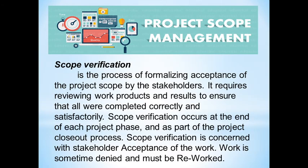Scope verification is the process of formalizing acceptance of the project scope by the stakeholders. It requires reviewing work products and results to ensure that all were completed correctly and satisfactorily. Scope verification occurs at the end of each project phase and as part of the project closeout process. It is concerned with stakeholder acceptance of the work — work is sometimes denied and must be reworked. Scope verification ensures that deliverables are in alignment with the project scope and measures the accuracy of the work up to the point of cancellation, not work that was to be completed after project termination.